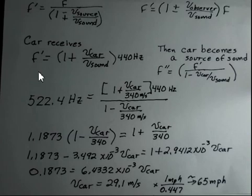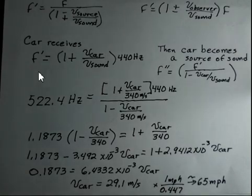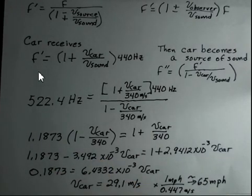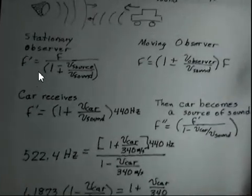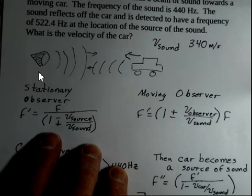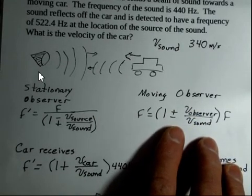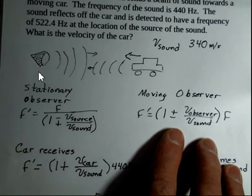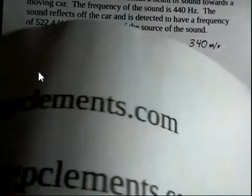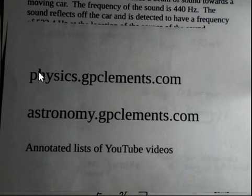29.1 meters per second is the speed of the car — moving towards the source of the sound. If we want to know the miles per hour: 1 mile per hour equals 0.447 meters per second, so this is about 65 miles per hour. The principle of Doppler shift for sound requires us to keep track of which object is moving — source or observer — and select the correct plus or minus sign based on the concept that when objects are approaching each other, the new frequency must be higher than the original frequency.